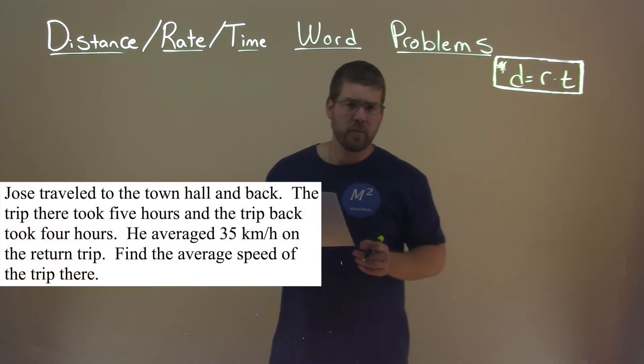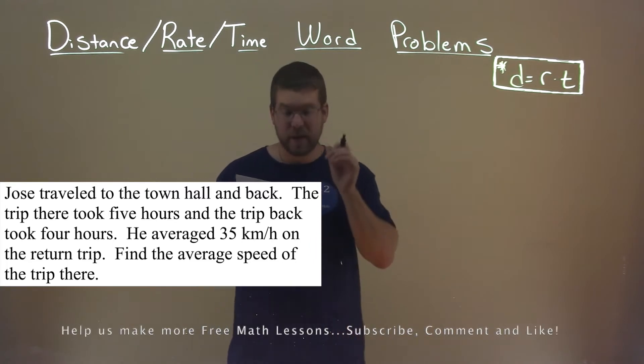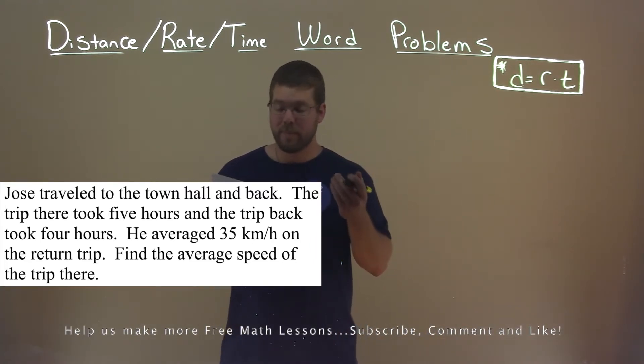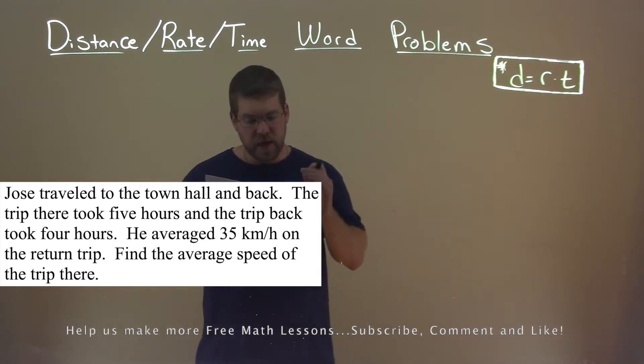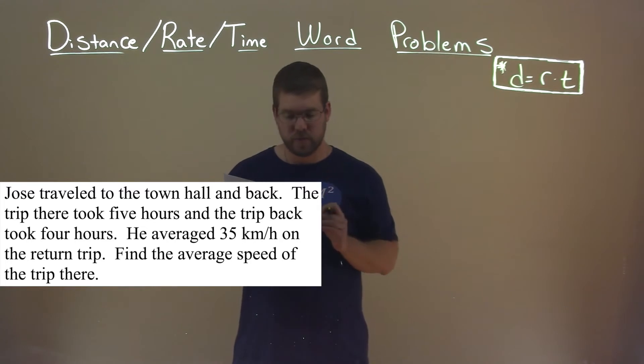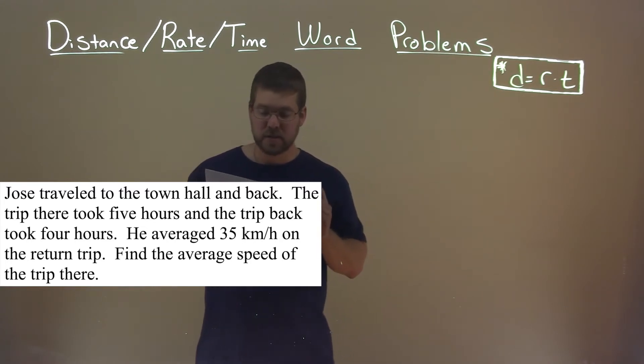We're given this problem right here. Jose traveled to the town hall and back. The trip there took five hours, and the trip back took four hours. He averaged 35 kilometers per hour on the return trip. Find the average speed of the trip there.